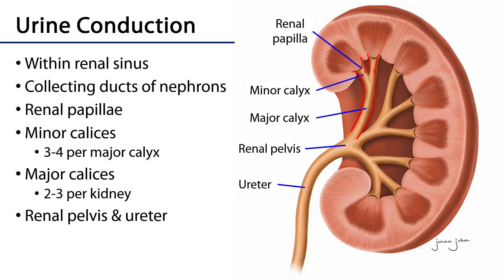Major calyces will coalesce to form the renal pelvis, and typically we'll have two to three major calyces per kidney. That renal pelvis can then be seen exiting the hilum and is contiguous with the ureter, which will then conduct urine down to the urinary bladder.